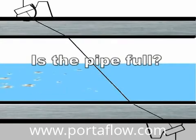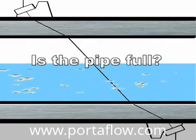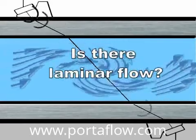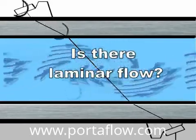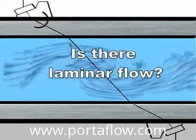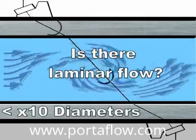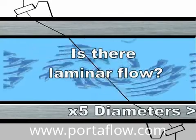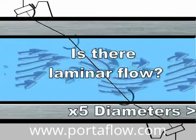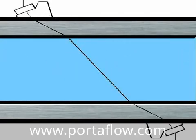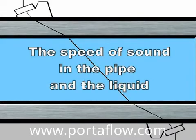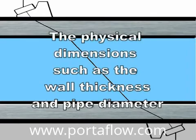Therefore we need to know: Is the pipe full? Excessive bubbles or particulates in the pipe will disperse the signal. Is there laminar flow? Because if it's very disturbed flow, again this will disperse the signal. Typically you'll have laminar flow when you have 10 diameters upstream and 5 diameters downstream from the flow meter clear of any obstructions. We need to know the speed of sound in the pipe and the liquid for the refraction angle calculation, as well as the physical dimensions such as the wall thickness and pipe diameter.